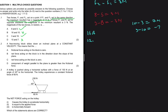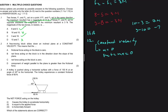Question 1.2: a free-moving block slides down an inclined plane at constant velocity. Moving at constant velocity means acceleration is zero. And if acceleration equals zero, then by F_net equals ma, the net force is also zero.